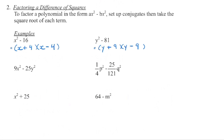Same thing here — no greatest common factor, we are subtracting. Set up the conjugates, one is a plus and one is a minus. Square root 9x squared to get 3x, and the square root of 25y squared is 5y. Don't be scared of fractions — if the numerators are perfect squares, the denominators are perfect squares, and each variable is a perfect square, then each entire term is a perfect square, and we are subtracting, so we have a difference of squares.